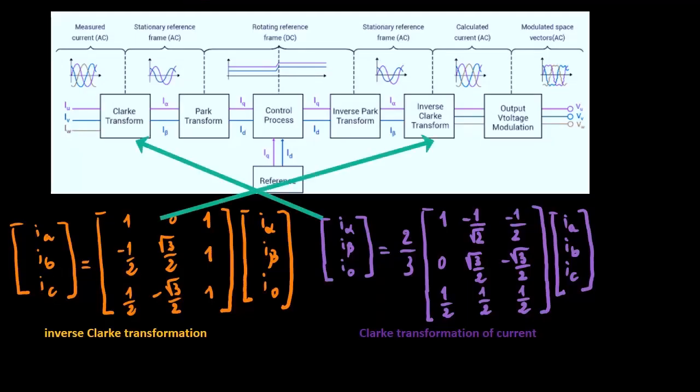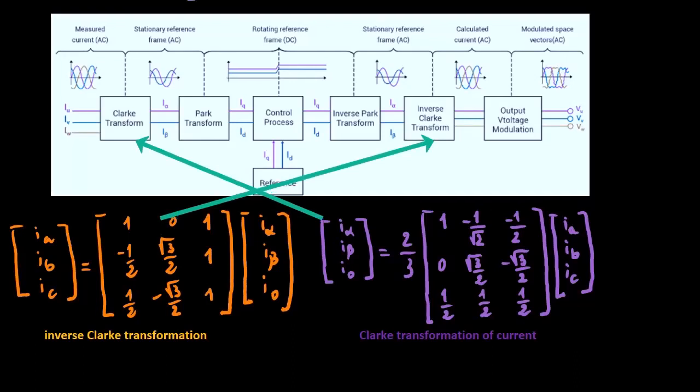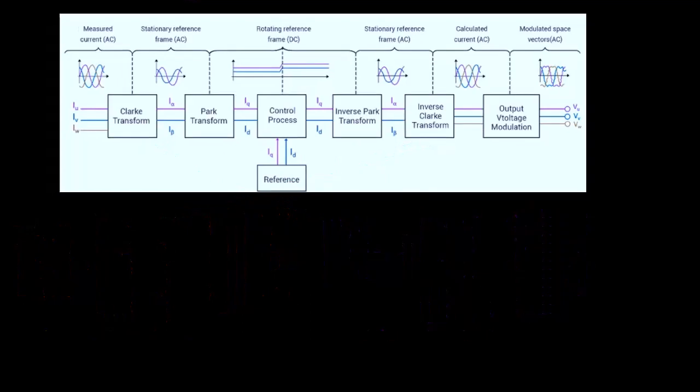In the last videos we looked at the relationship given by the Clark transformation. There is also a clear relationship between the variables of the reference frame alpha-beta and those of the dq reference frame.